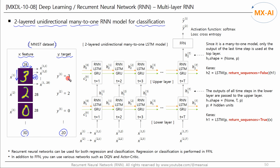The target Y consists of 10 categories. In the feedforward network, classification is performed using the target Y. The activation function of the final output layer is set to softmax, and cross-entropy loss is used. Now let's look at the structure of this RNN model.